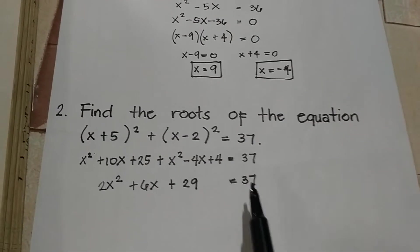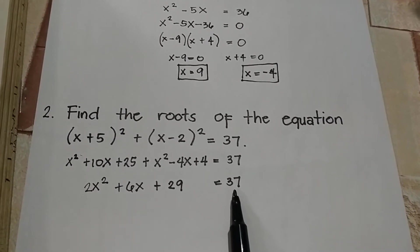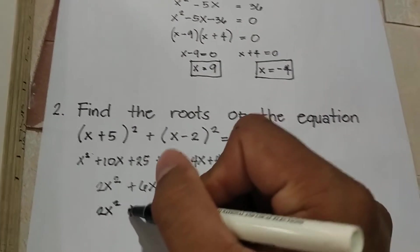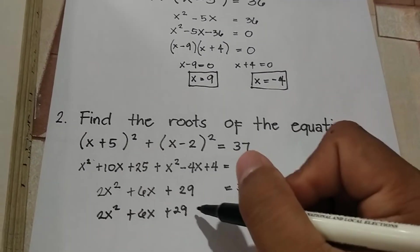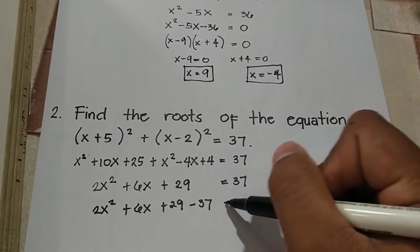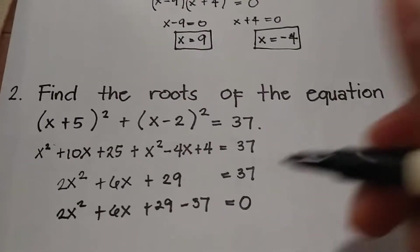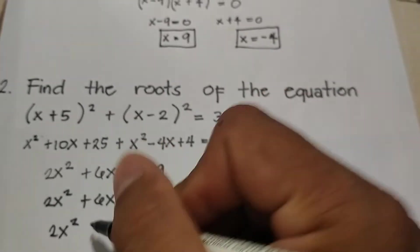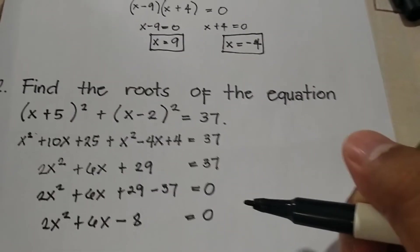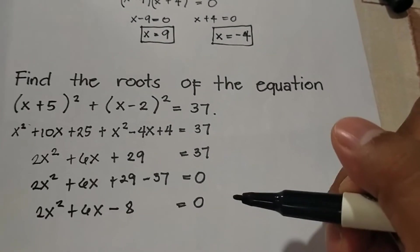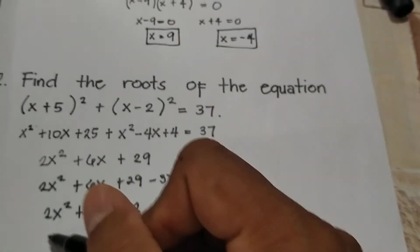Now combine like terms. We have x squared and x squared giving 2x squared; 10x and negative 4x giving 6x; and 25 and 4 giving 29. So we have 2x squared plus 6x plus 29 equals 37. Transferring 37 to the other side, 29 minus 37 gives negative 8, so we have 2x squared plus 6x minus 8 is equal to 0. Now apply factoring to find the values of x.